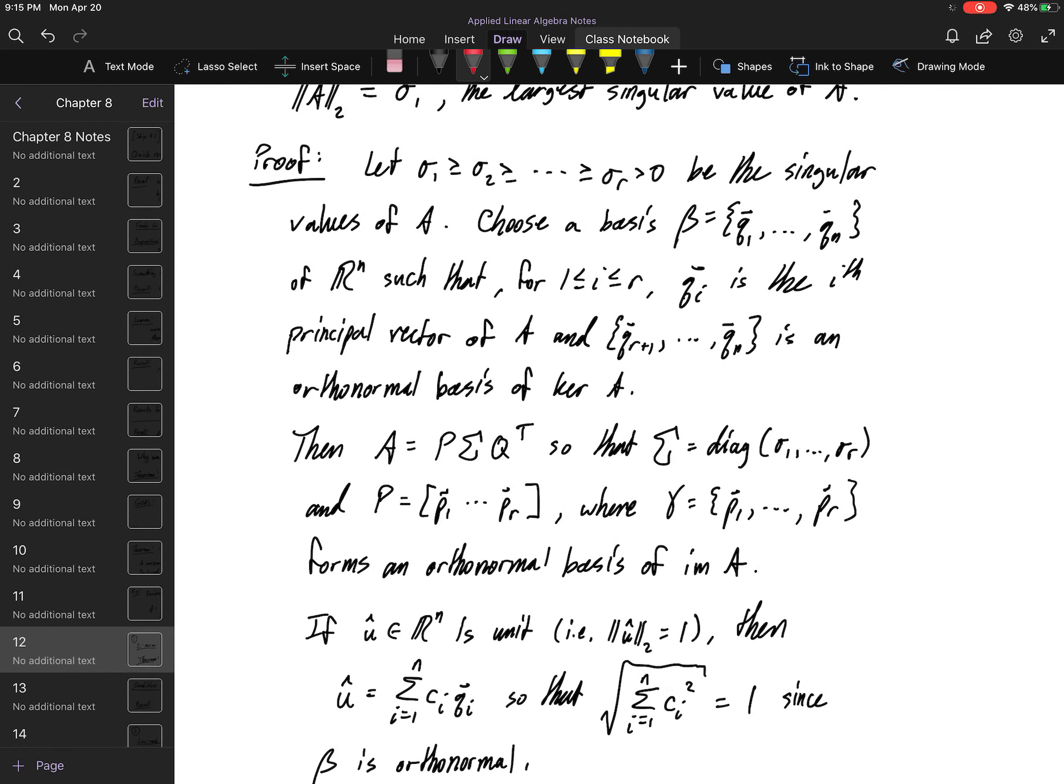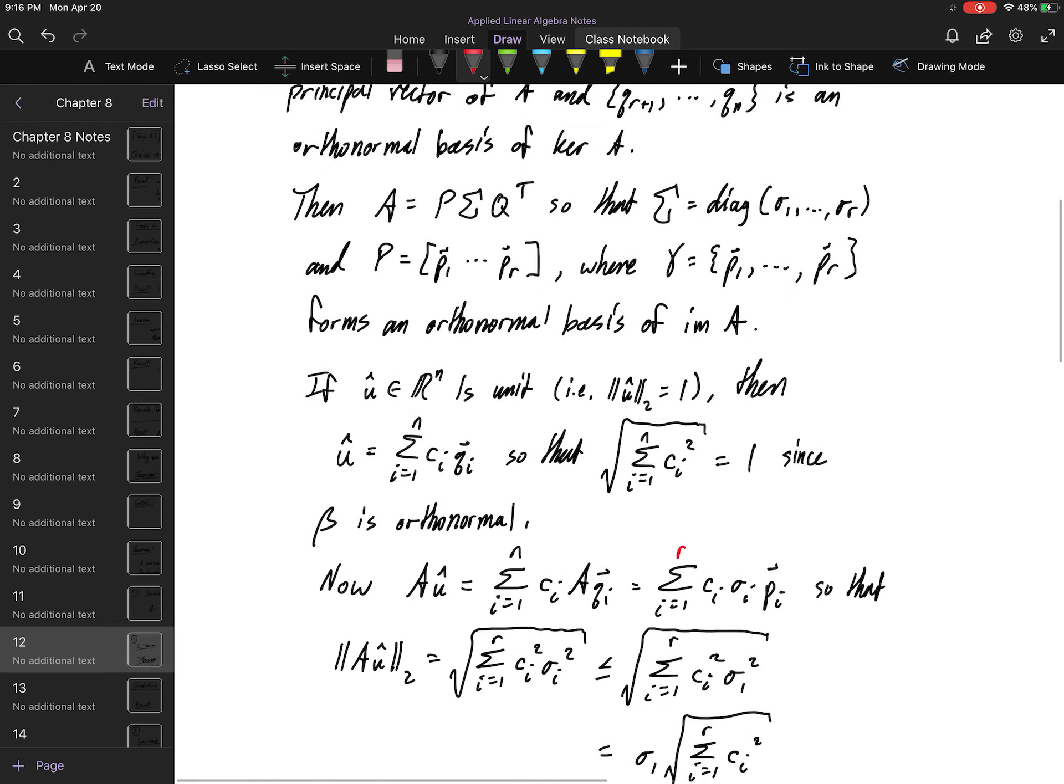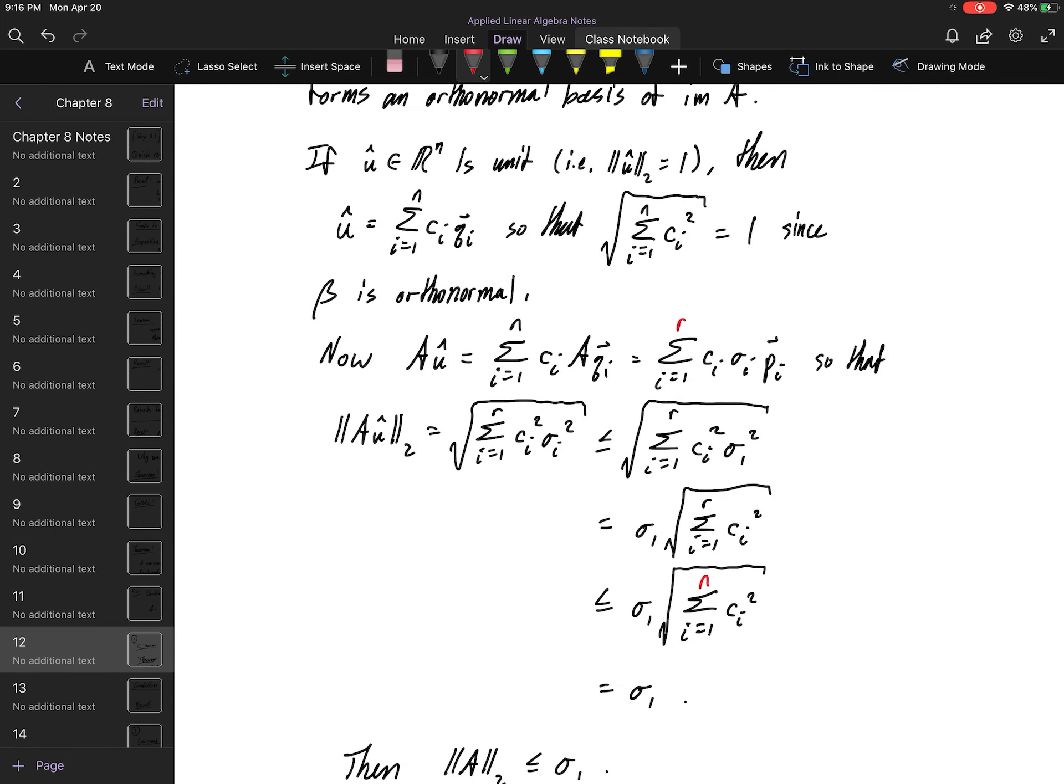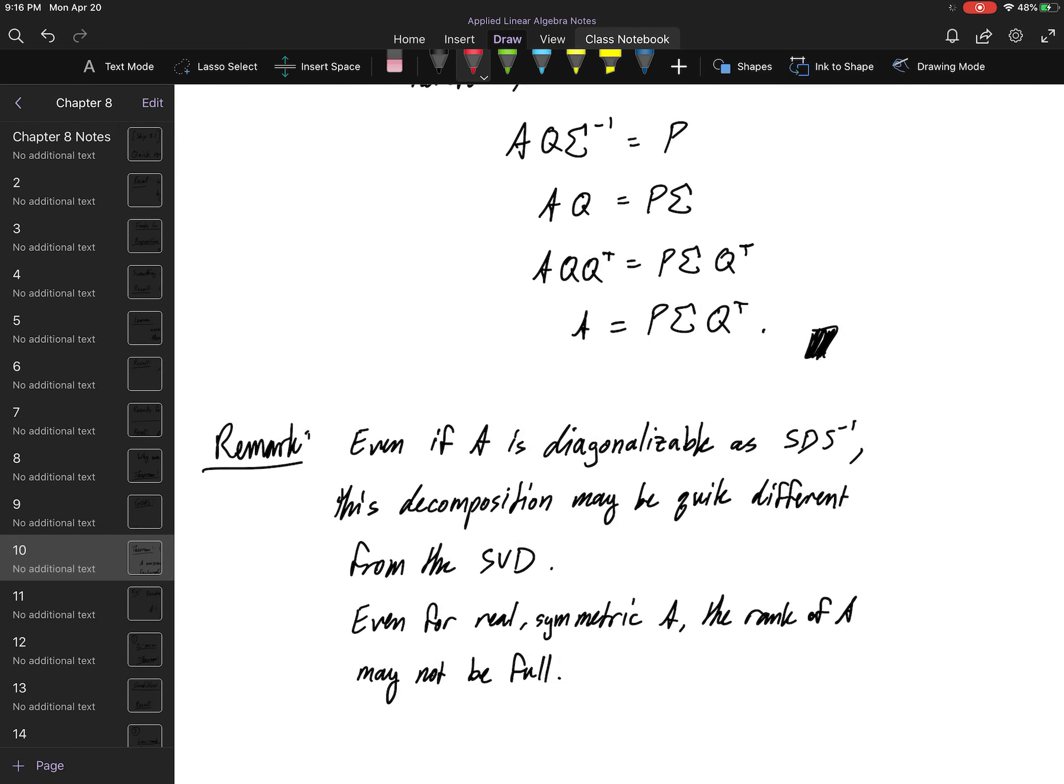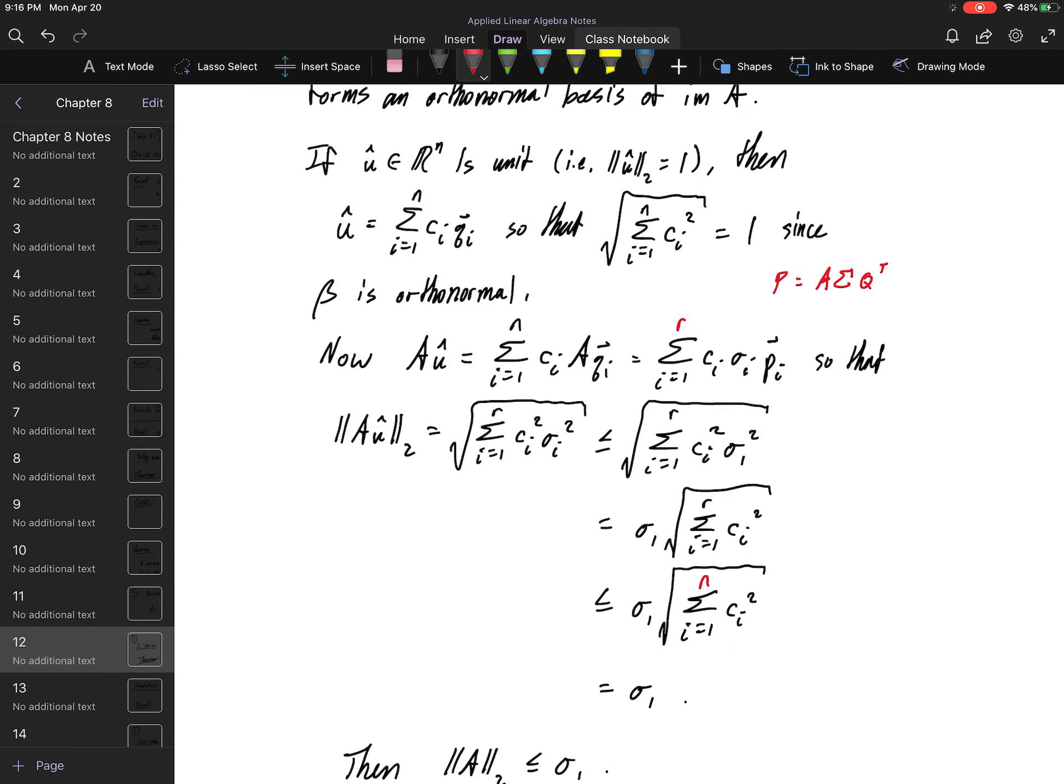So, if I have a unit vector u hat sitting in Rn, remember, my two norm is asking what's the largest that this thing could scale by, what is the absolute largest value that, or largest length that can be scaled out by multiplying by A. So I'm going to go ahead and let u here, u hat, be expressed in this q basis. So let's see. If u hat is indeed equal to this linear combination of these qi, of these qi vectors, then I know that the length of this guy, because it's a unit vector, I'm going to go ahead and use my orthogonal decomposition theorem, which creates a general Pythagorean theorem.